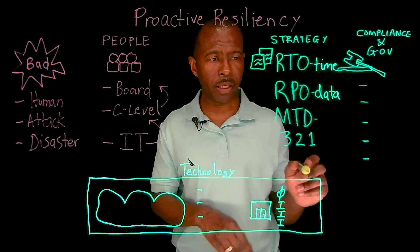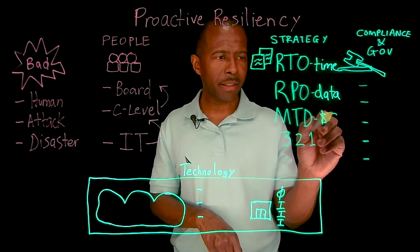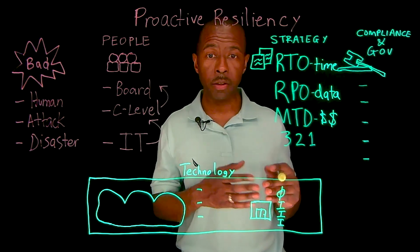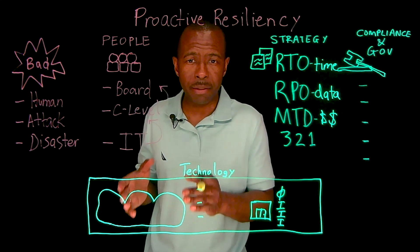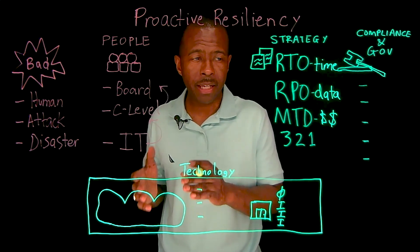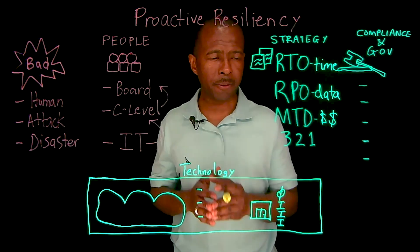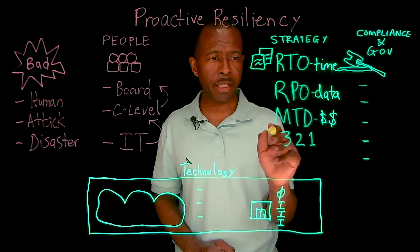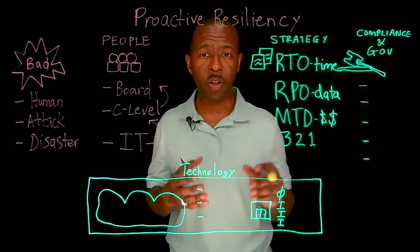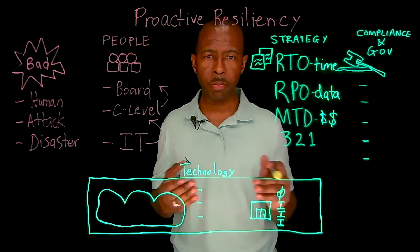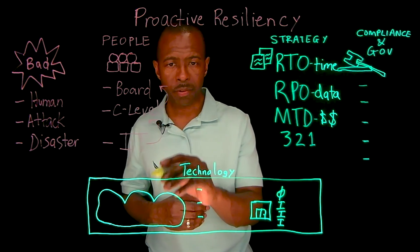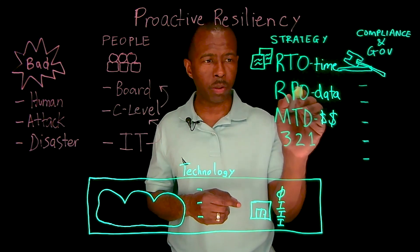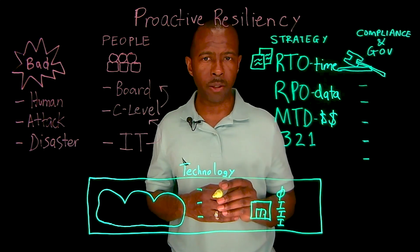Another one is Maximum Tolerable Downtime. I like to say this one is the money card — dealing with how much money you can afford to lose if the business or a mission-critical application was down and you're losing money by the minute. There's also money associated with Recovery Time Objectives and Recovery Point Objectives; the more aggressive they are, the more cost is associated with implementing the technology to deliver those objectives.